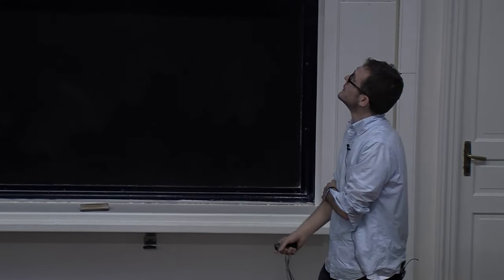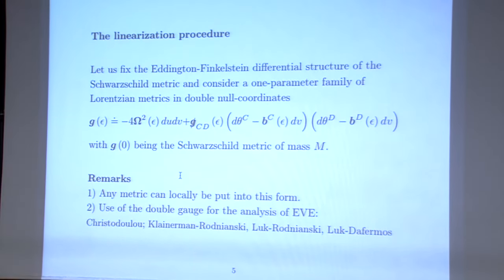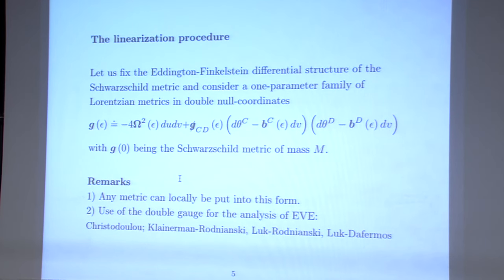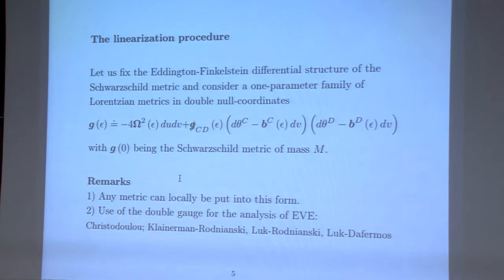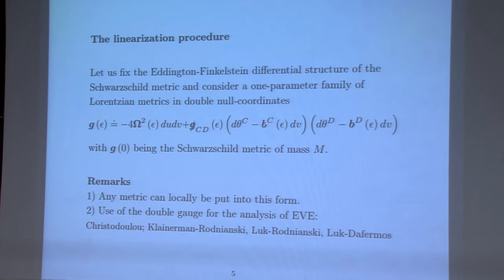We start by fixing the Eddington-Finkelstein differential structure of the Schwarzschild metric — the u, v, and angular coordinates — and consider a one-parameter family of Lorentzian metrics in these double-null coordinates. When epsilon is zero it's just the Schwarzschild metric of mass m. So u and v are null coordinates; hypersurfaces of constant u and constant v are null, they intersect in topological spheres with metric g-slash. There is also a shift b, which is a one-form on the spheres, and a lapse function omega-squared-epsilon.